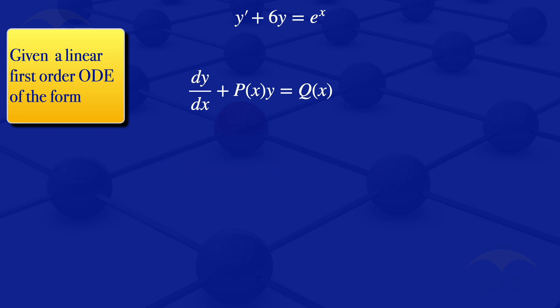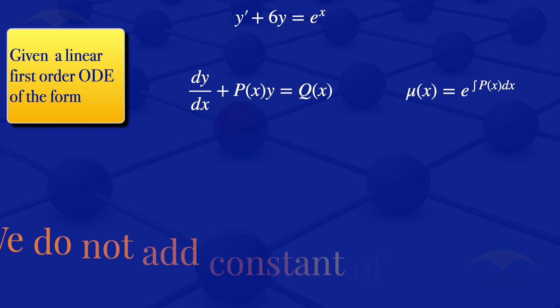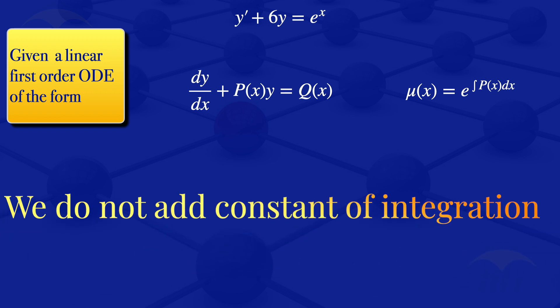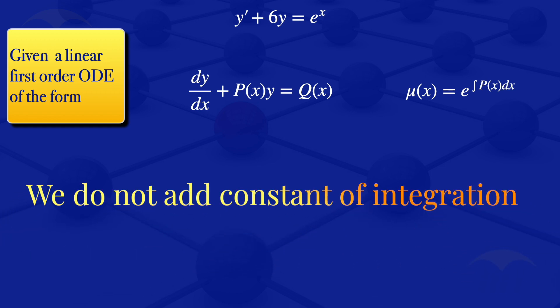If we have an equation of this form, the integrating factor — which we denote by μ(x) — is equal to the exponent of the integral of P(x) dx. When evaluating the integrating factor, we do not add the constant of integration.